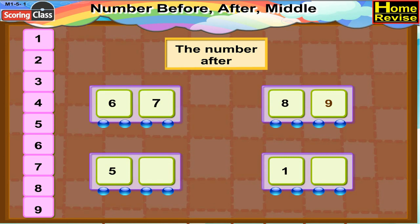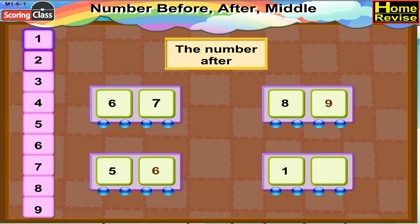Next is 5. Tell me what comes after 5 in the counting. Yes, it is 6, so write 6. Now we have number 1. After 1 we have 2, so write 2 over here.